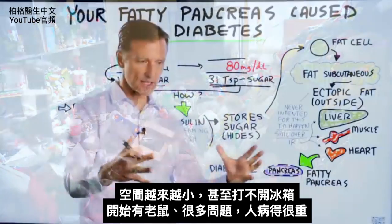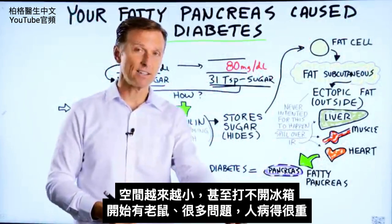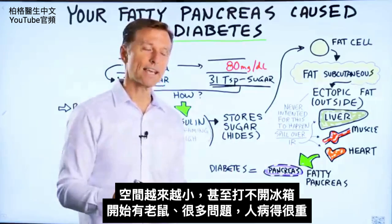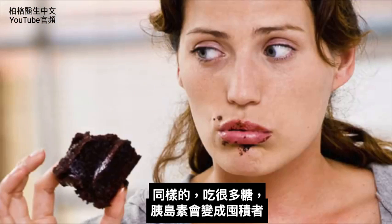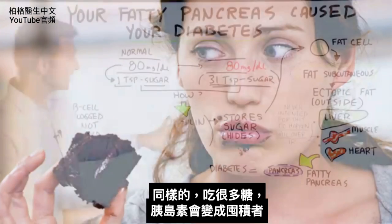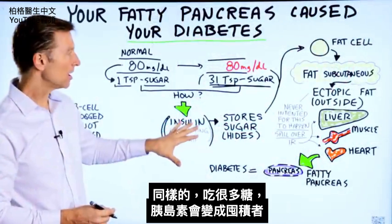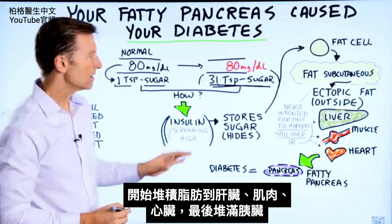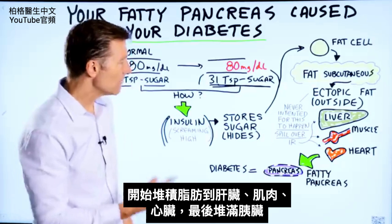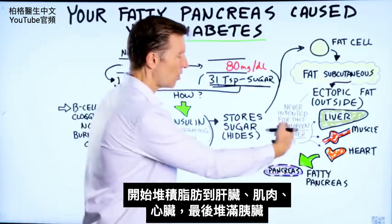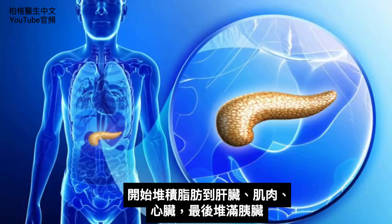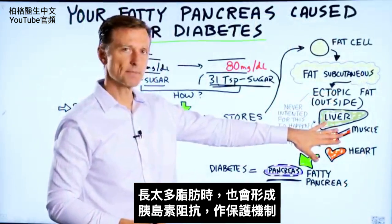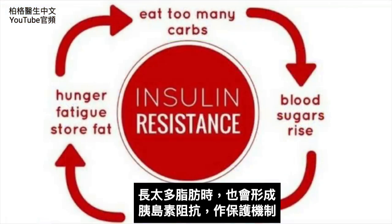Eventually there's no place to live — the space becomes less and less until they can't even open the refrigerator, and they get very, very sick. If you're consuming this much sugar, the insulin hormone has now become a hoarder. Not only is it going to pack the liver with fat, and the muscle, and the heart — but it eventually spills over into the pancreas.